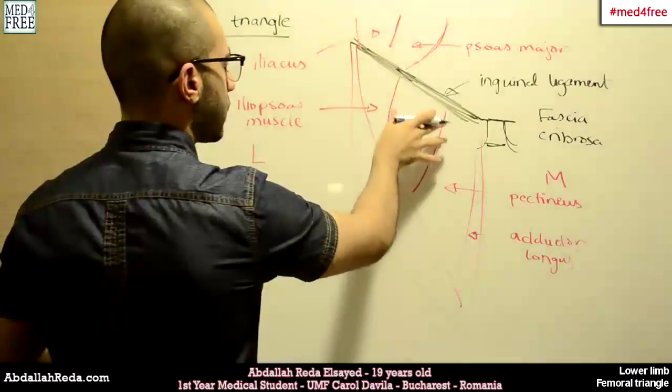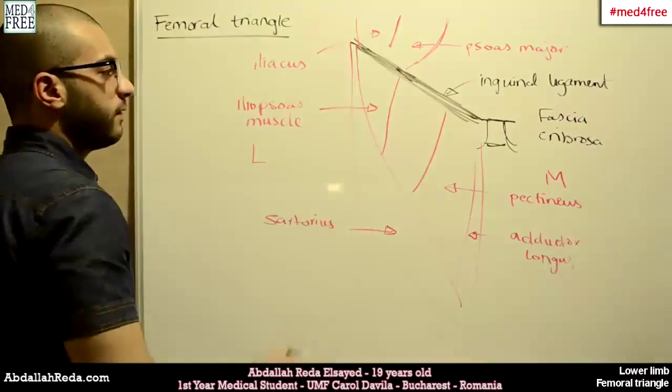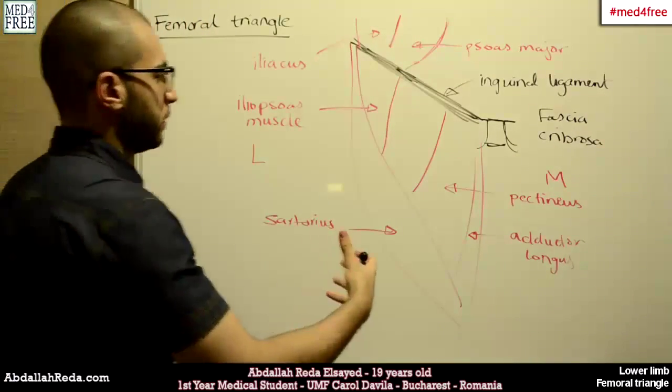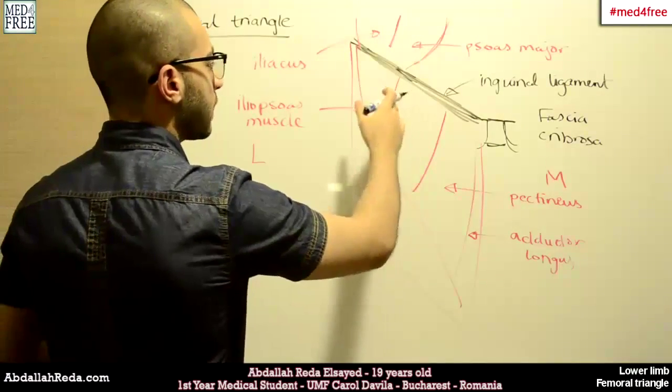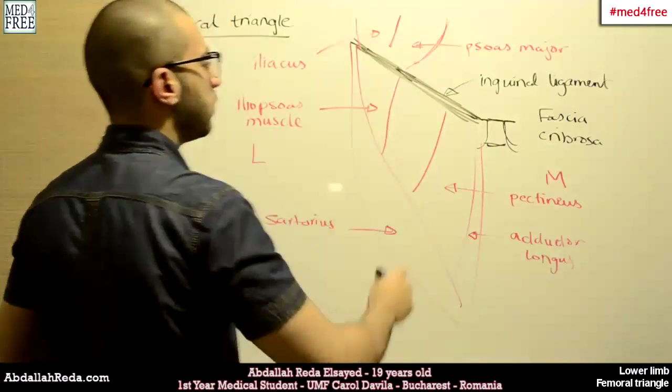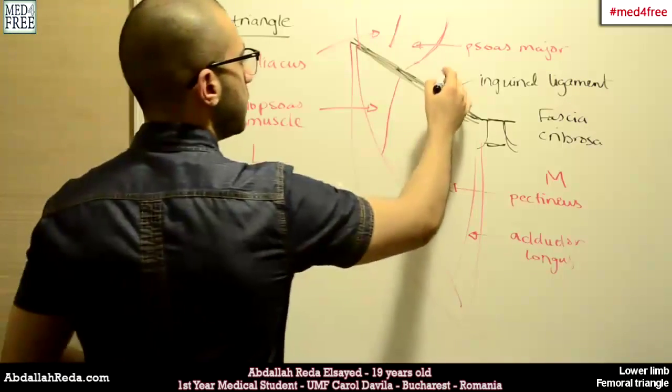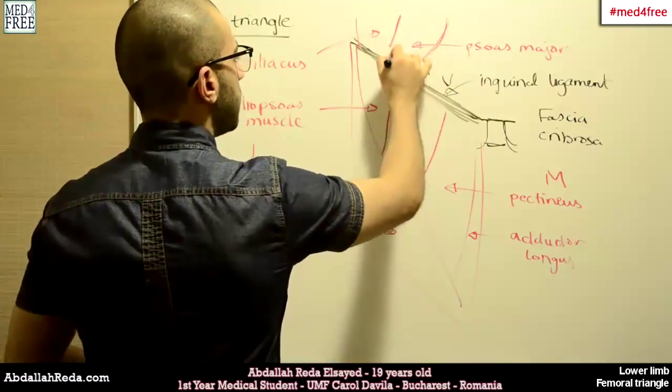Above the elements which are inside, we have a bundle, the femoral bundle, with three elements which are ordered like this: V, A, N.